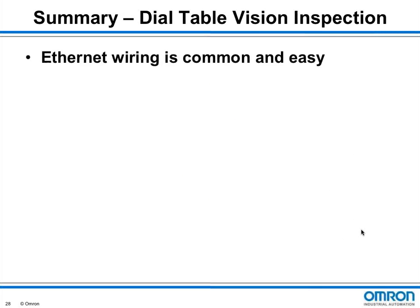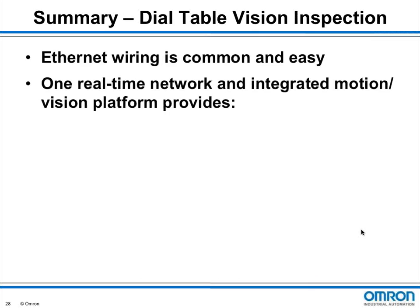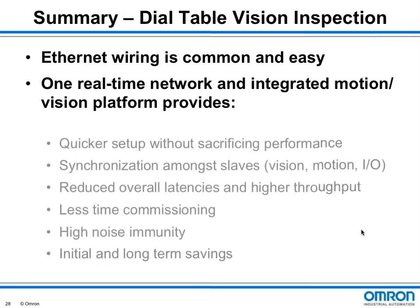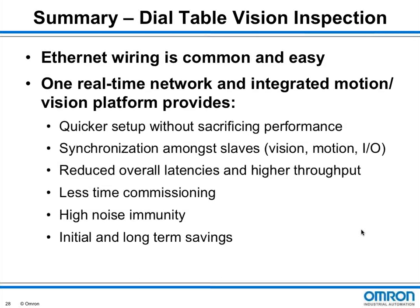In summary, the Omron EtherCAT solution was easy to implement — plugging in a cable saves far more time than connecting individual wires. Existing connection hardware and cables are readily available and inexpensive. Setup was easy via simple menus and command implementations with no complex code required. Synchronization is very fast, and less time commissioning translates into project savings. High noise immunity translates into less downtime. All this translates into overall project and operational cost savings.